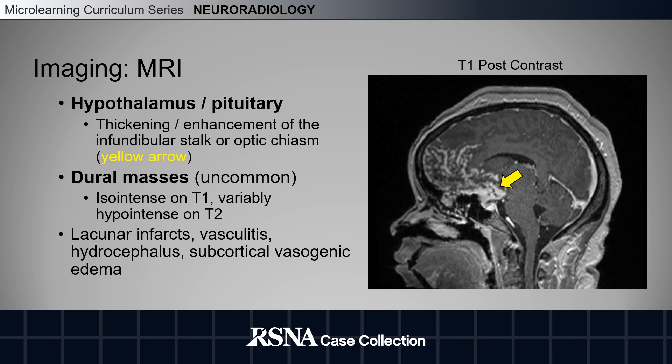There may also be involvement of the hypothalamus and pituitary gland, demonstrated as thickening and enhancement of the infundibular stalk or optic chiasm. It is uncommon but possible to see dural masses, which appear isointense on T1 sequences and variably hypointense on T2 sequences.